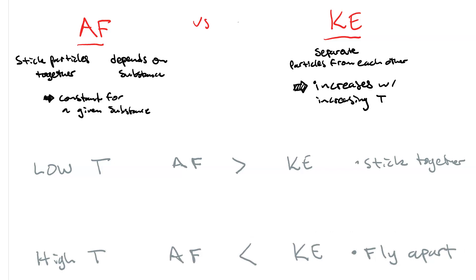We can also infer that there's some intermediate temperature where the attractive force and the kinetic energy are sort of equal — this is a compromise between the particles sticking together and flying apart: some sort of intermediate state.